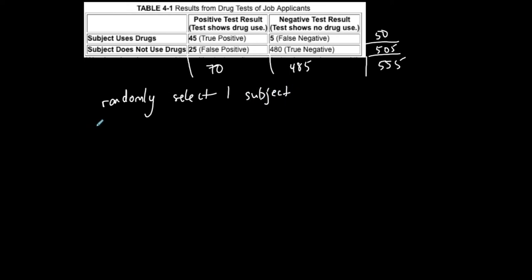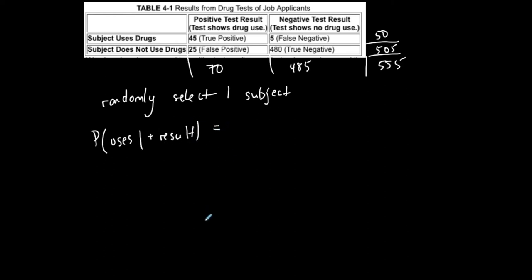Let's randomly select one person from this table. Find the probability that this person uses drugs given that they had a positive result. Remember, a positive result does not mean they actually use drugs — it could be a false positive. So don't confuse positive results with actually using.